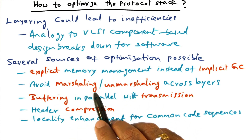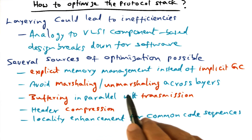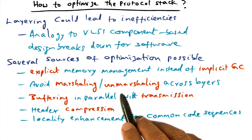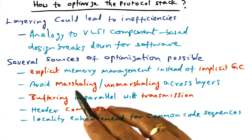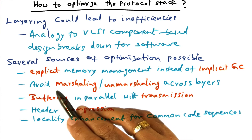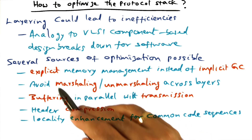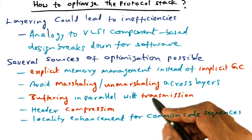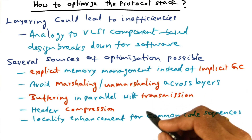OCaml has the ability for doing marshalling and unmarshalling of arguments to go across layers, which is a very good thing for component-based design. But when going across layers, these things can add overheads. This is another source of optimization — avoiding marshalling and unmarshalling across layers by collapsing the layers.